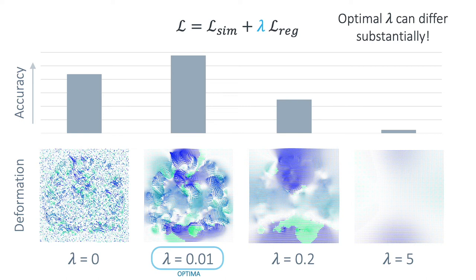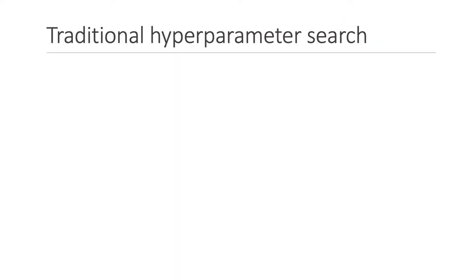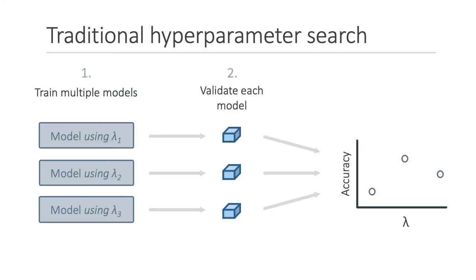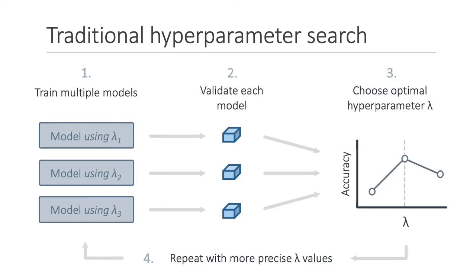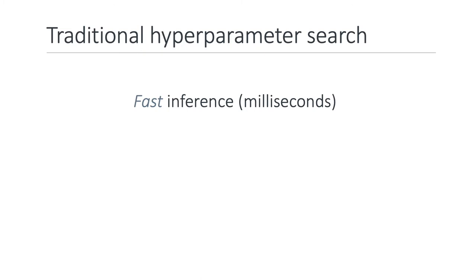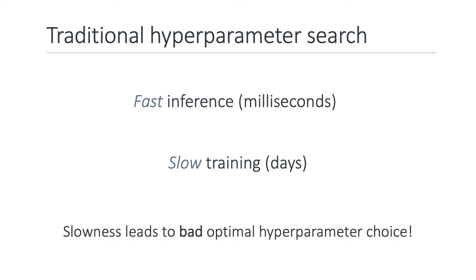Say we were developing a new model and wanted to determine this optimal value. Most likely we'd go about this with a traditional grid or random search, training a few models each with different lambda values, then validating these models on a subset of data where accuracy might be determined either visually or through some annotation overlap. This process is notoriously time consuming and tedious, especially in learning-based methods which benefit from speedy inference, but at the cost of very slow training times, where it can take days or sometimes even weeks for these large models to converge.